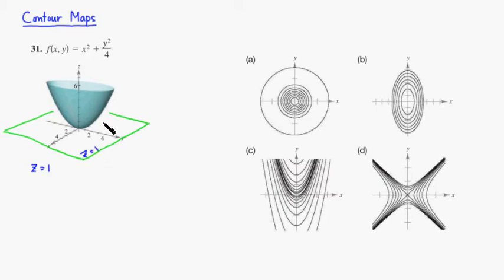Once you cut this object by this plane z equals 1, you will have an intersection. It's going to probably look somewhat like this — it looks circular or elliptic.